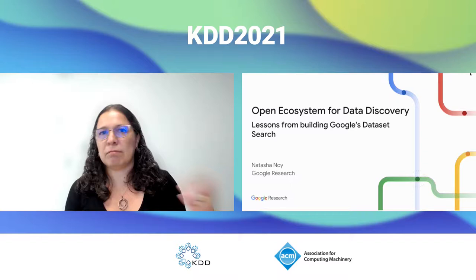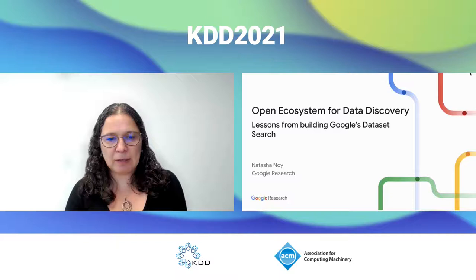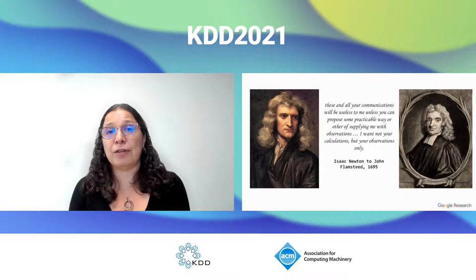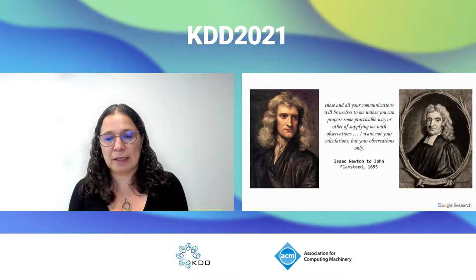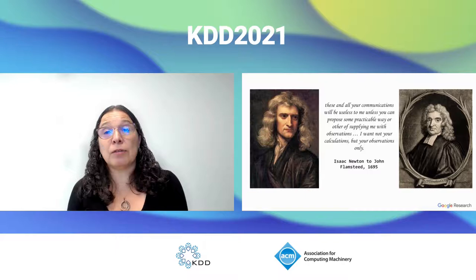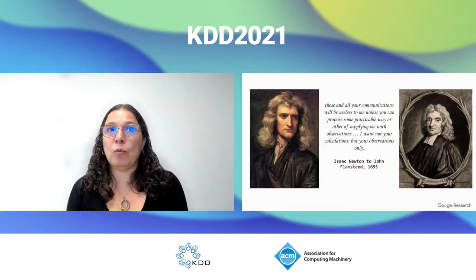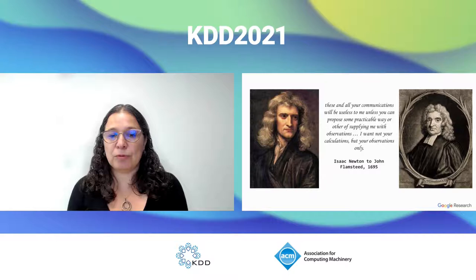I want to start with a little bit of history. The idea of data sharing and the need for publishing data along with your publications is not new — it's not even a 20th century idea. As early as 1694, Sir Isaac Newton wrote to John Flamstead, at the time the royal astronomer, asking him for the tables of star movement. Flamstead refused, which precipitated years of back and forth and animosity between the two scientists.